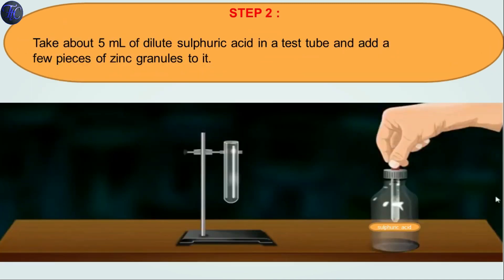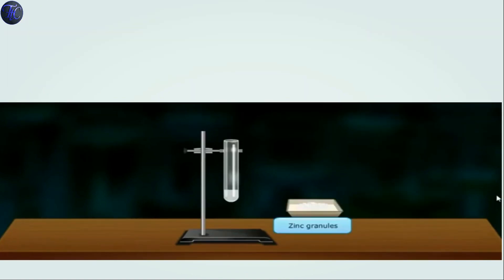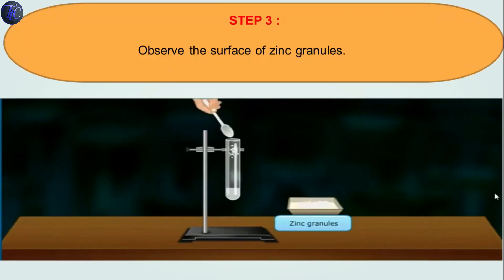Step 2: Set the test tube on the test tube stand and with the help of a dropper, add 5 ml of dilute sulfuric acid in the test tube. After adding dilute sulfuric acid, add zinc granules in the test tube. Observe the surface of the zinc granules.